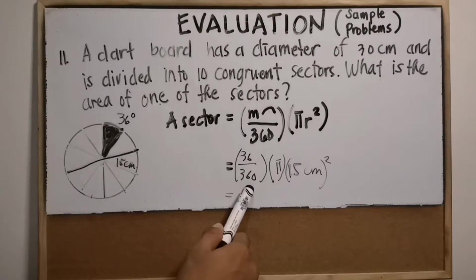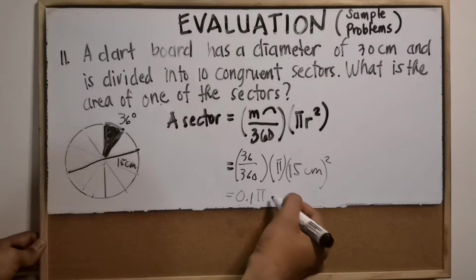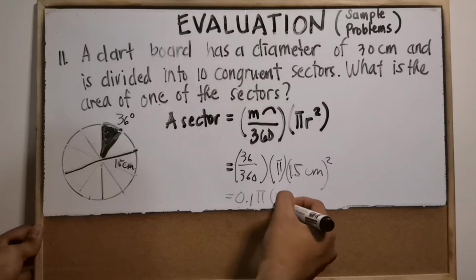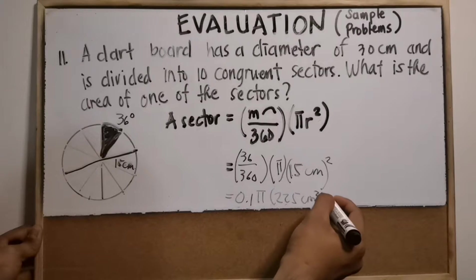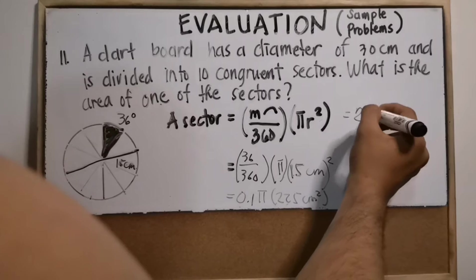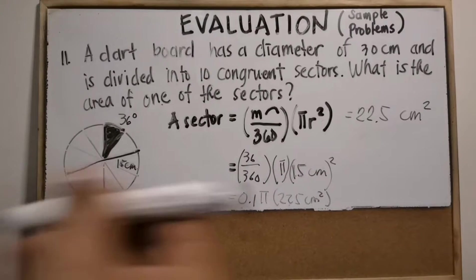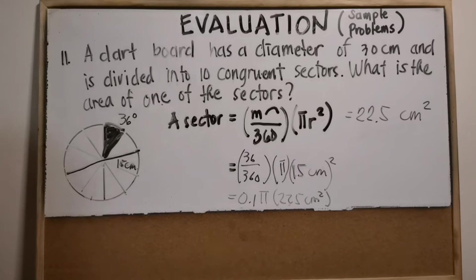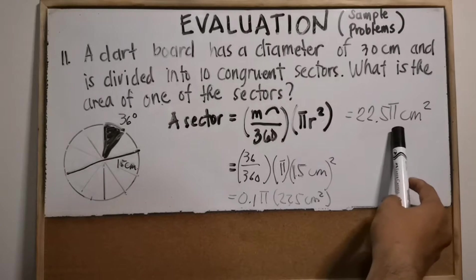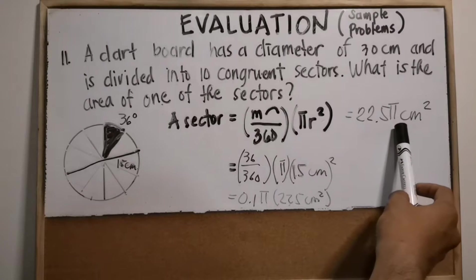36 divided by 360 is 0.1, or 1 over 10. Copy pi, and 15 squared is 225 square centimeters. 0.1 times 225 equals 22.5 square centimeters — and don't forget pi. So write pi here. If this answer can't be found in the choices, multiply 22.5 by pi, or 3.14.